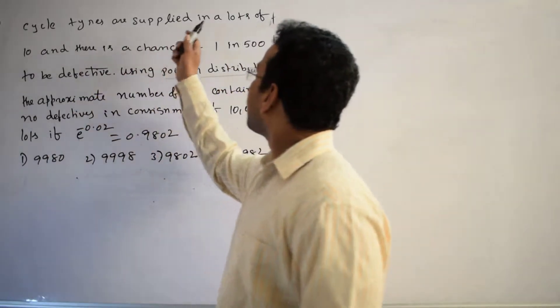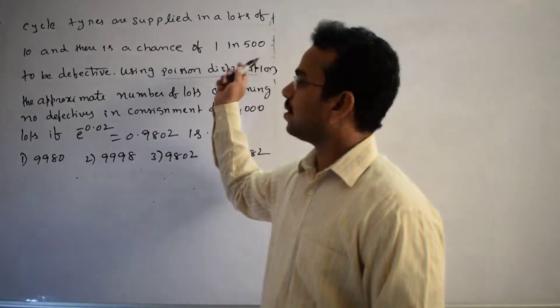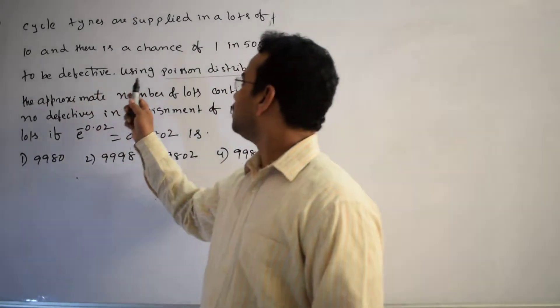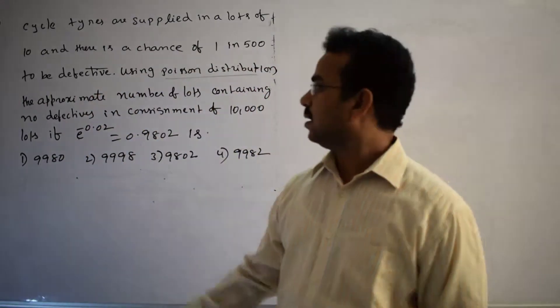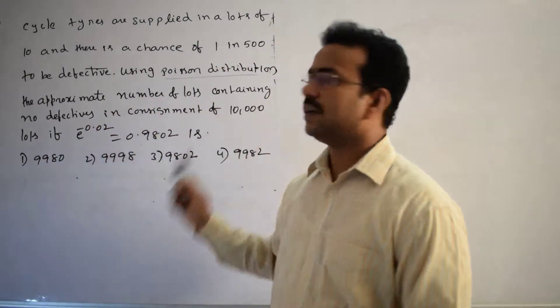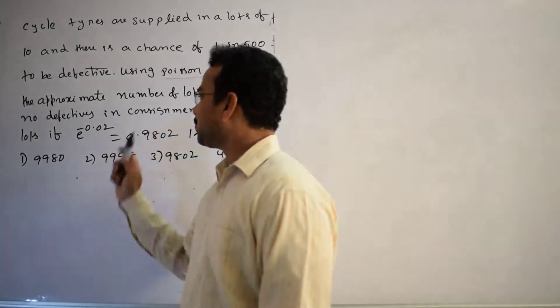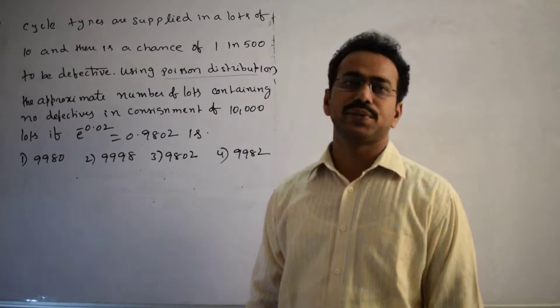Cycle tires are supplied in lots of 10, and there is a chance of 1 in 500 to be defective. Using Poisson distribution, the approximate number of lots containing no defectives in consignment of 10,000 lots if e power minus 0.02 equals to 0.9802 is...